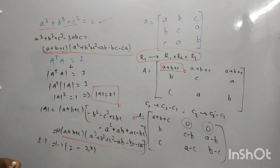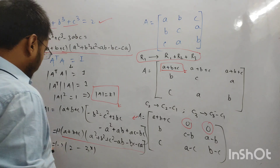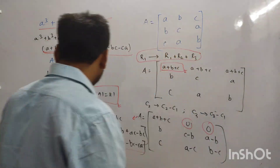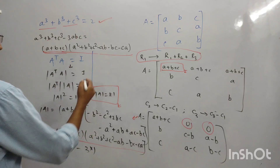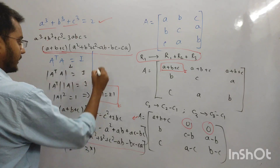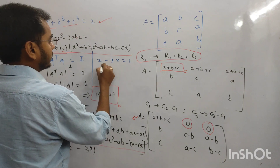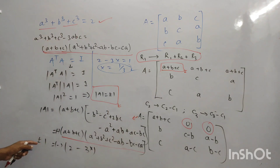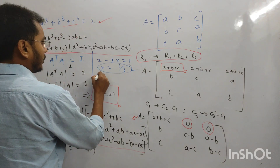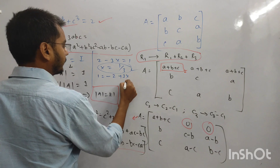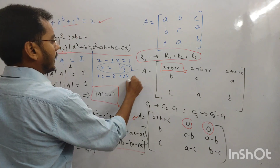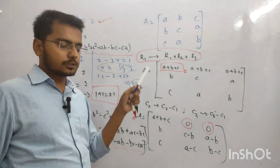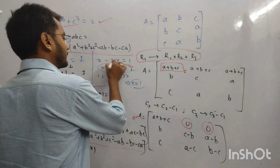एक बार +1 लो, एक बार -1 लो। अगर |A| = -1: -(2 - 3X) = -1 → 2 - 3X = 1 → X = 1. अगर |A| = +1: -(2 - 3X) = 1 → -2 + 3X = 1 → X = 1. दोनों cases में ABC = 1. Option में 1 है, उसे tick करो — यही answer है।